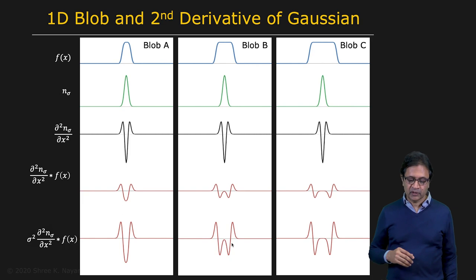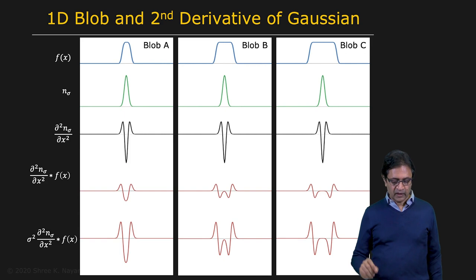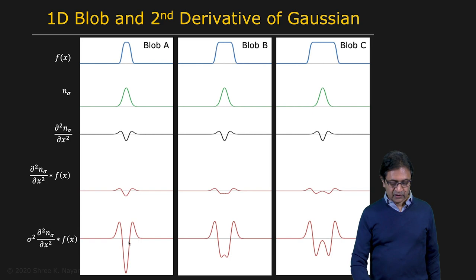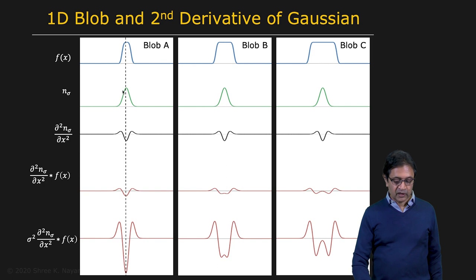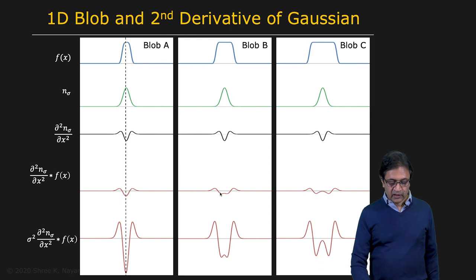Now let's see what happens as you change the sigma of the Gaussian. If we increase sigma a little bit, this response gets much sharper — it reaches a maximum right here, which is exactly where the center of this blob lies. So if you can find this peak, you have found blob A. But you haven't found blobs B and C yet, so we continue to increase sigma.